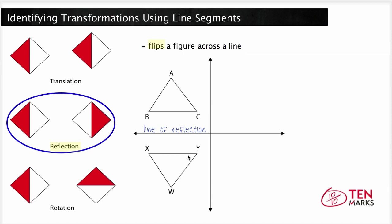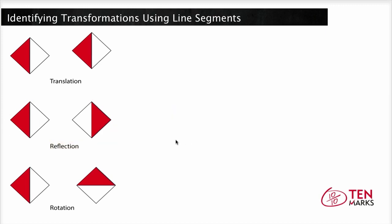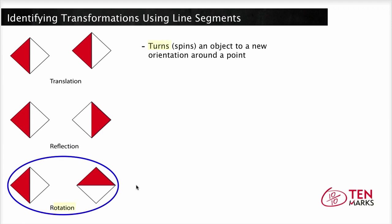Looking at this figure, triangle WXY is the image of triangle ABC after it has been reflected across the x-axis. Triangle WXY is flipped across vertically, but since the image and pre-image have the same size and shape, they're congruent. Since this is a reflection, each pair of corresponding sides are congruent: side AB is congruent to side WX, side AC is congruent to side WY, and side BC is congruent to side XY.